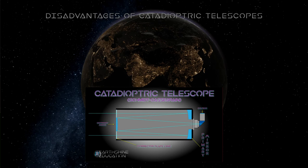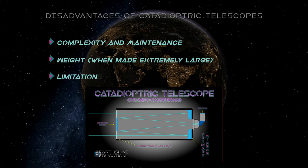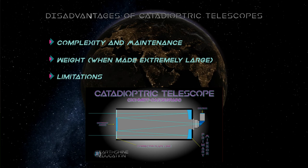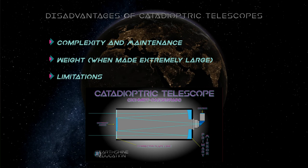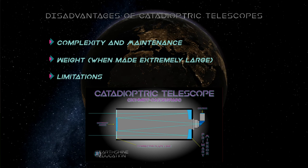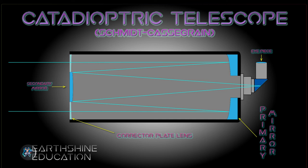There are, of course, disadvantages to a catadioptric telescope. The biggest one, of course, being complexity and maintenance. With all the lenses and mirrors involved, these telescopes are far more complex. It means alignment and cleaning become paramount to keeping the telescope in top condition. Because you do have mirrors and lenses all combined, you also have a bit of an increase in weight. Now, I did say earlier that you can get them shorter and lighter. That is true, but the corrector lens and all the mirrors involved can become very heavy when you get to extremely large sized telescopes. There are some inherent optical limitations due to the placement of the secondary mirror. This also exists in the Cassegrain and the Newtonian telescope design as well. Depending on how big that secondary mirror is, you are reducing the amount of light that eventually gets to your primary mirror.